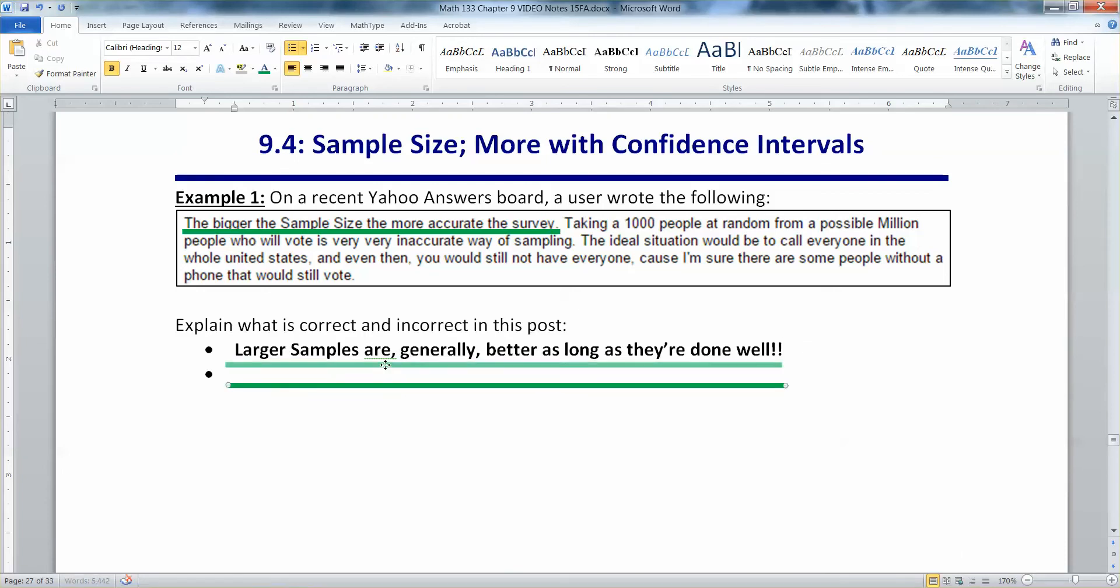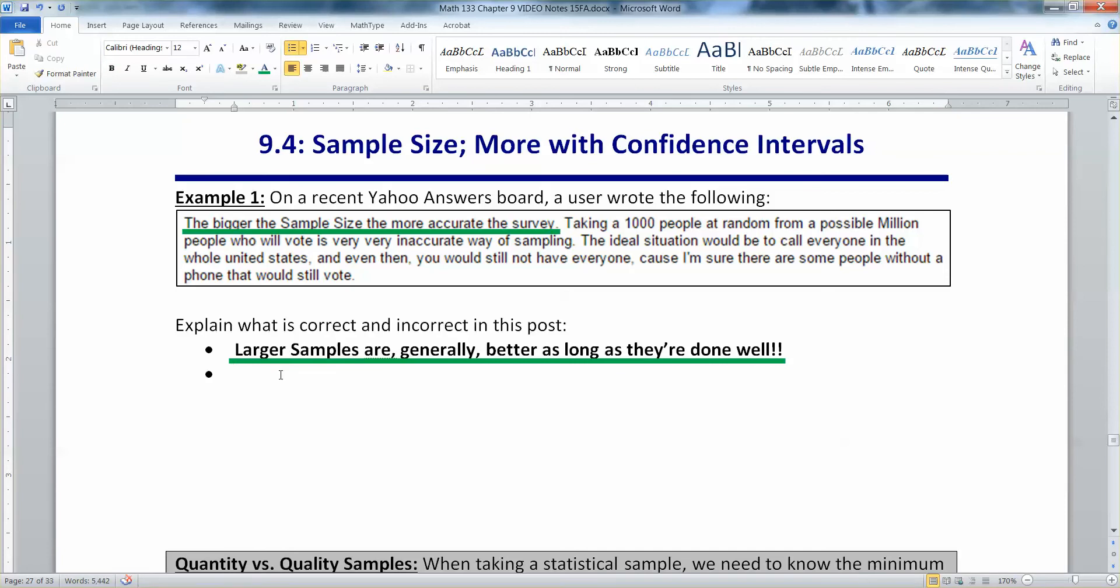For one thing, they're completely inaccurate that a thousand people at random is a very very inaccurate way of sampling. That's not true at all. A thousand people is perfectly fine. And its inaccuracy, I don't even know what they mean by that. It has nothing to do with accuracy, or everything to do with it.